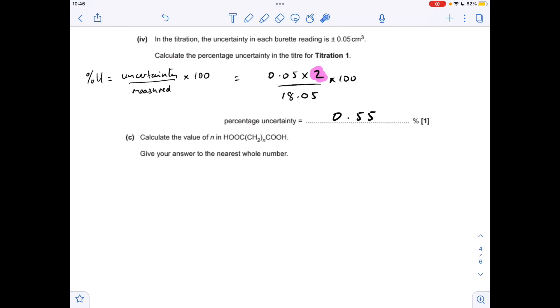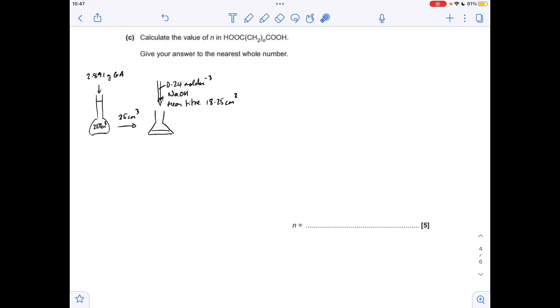Moving on to the calculation now. I've got my trusty diagram just to visualize what's happened in the experiment. They've taken this many grams of the acid, dissolved in 250 cm³ in a volumetric flask, taken 25 cm³ out, put it in the conical flask, and carried out the titration using 0.24 mole per dm³ sodium hydroxide. We've already established the mean titre was 18.25 cm³.